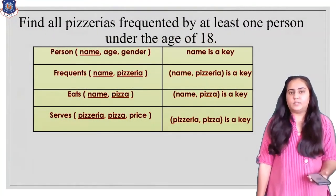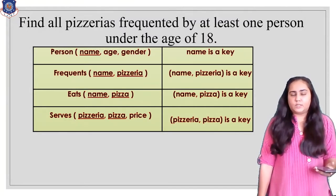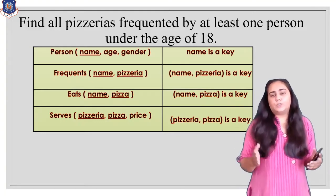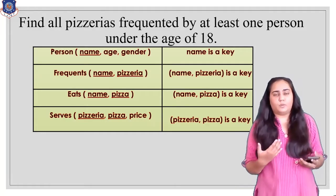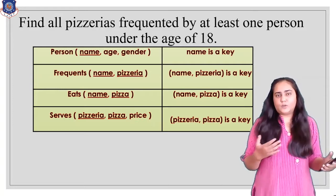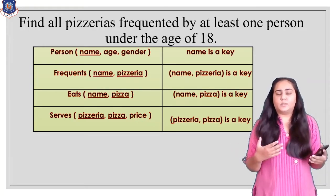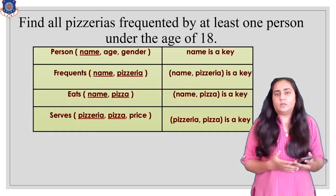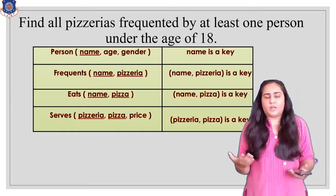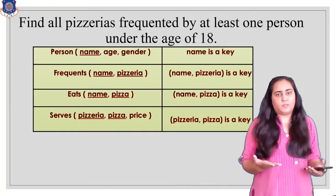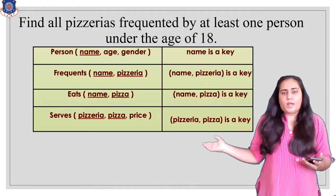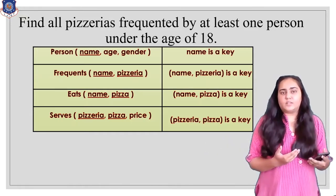The first question is: find all pizzerias frequented by at least one person under the age of 18. Your first task should not be which operations to apply but rather which tables to use. Most questions are about natural join and use more than one table. So it's best to first find out which tables are needed. In this case I need a table that contains the name of the pizzeria, which can come from frequent or serves.